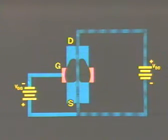The P material of the gate connects to the negative terminal of VGG and the N-channel is connected through the source to the positive terminal.